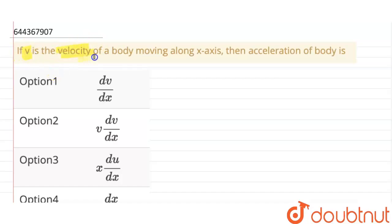So the question is: if v is the velocity of a body moving along x-axis, then acceleration of the body is: Option 1: dv by dx. Option 2: v dv by dx. Option 3: x du by dx. Option 4: v dx by dv.